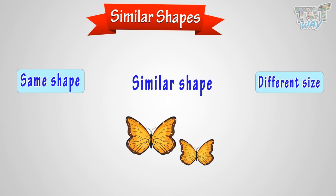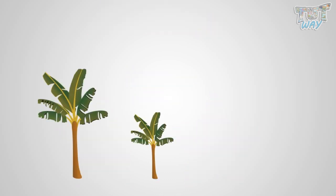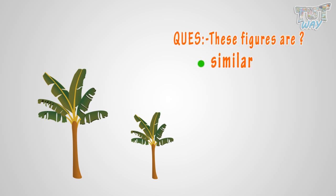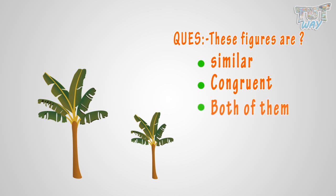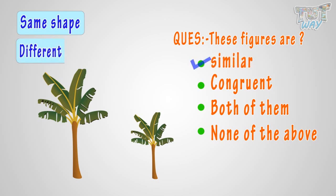So kids, now you know what are similar figures and congruent figures. Let me ask you a few questions. Here are two figures. Are these figures similar, congruent, both, or none of them? The two figures have the same shape, so they are similar figures. But their size is different, so they are not congruent. The answer is: similar figures.